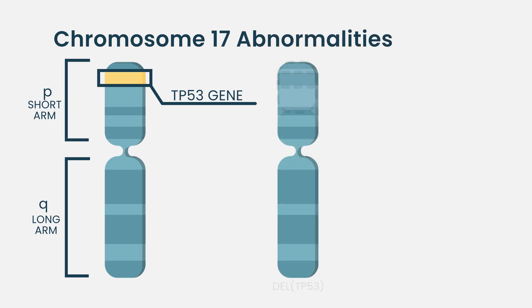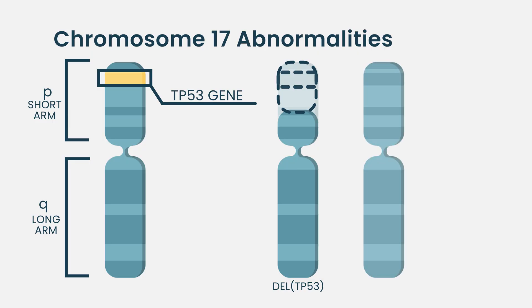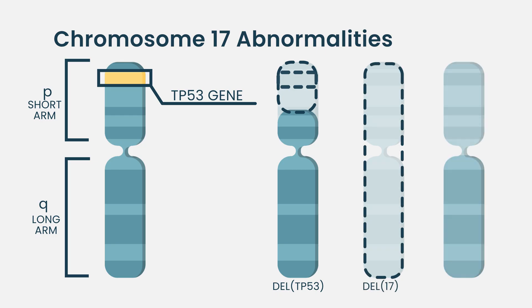When P53 is gone — P53 deletion, or the whole chromosome 17 is gone (minus 17), or the short arm of chromosome 17 (minus 17P) is gone — you've lost the ability to repair DNA. The TP53 gene makes the P53 protein, the guardian that keeps cell growth in check. When it's altered, myeloma can become harder to treat.